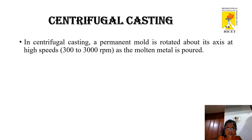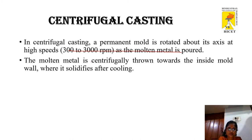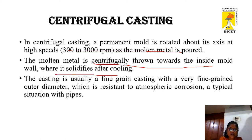So what is centrifugal casting? In centrifugal casting we have a permanent mold that is rotated about its axis at high speeds, from 300 to 3000 rpm, as molten metal is poured. The molten metal is poured into the mold and allowed to solidify. While the mold is rotating, the metal is poured into the center and due to centrifugal force, the liquid metal is thrown out towards the periphery where it solidifies after cooling. The casting is usually a fine grain casting with a fine grained outer diameter which is resistant to atmospheric corrosion.